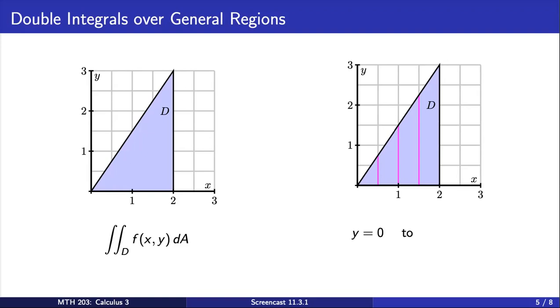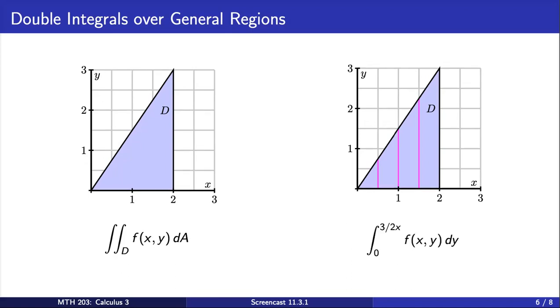First note that all these pink slices begin where y equals 0. The height of the slice is determined by the hypotenuse of the triangle shown here, which is a line with equation y equals 3/2 x. So this means our slices in the y direction run from y equals 0 to y equals 3/2 x. This means when we first integrate with respect to y, we get an integral of f from 0 to 3/2 x with respect to y.